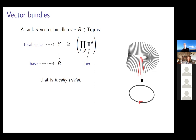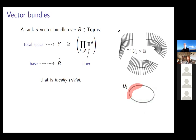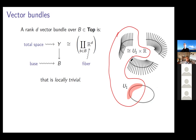Suppose you have a vector bundle where the base is the circle S^1 and the total space is the Möbius band. The pre-image of each point is a real vector space — in this case of dimension one, so this is a rank-one vector bundle. Locally trivial means I can cover the base by open sets so that when I restrict the vector bundle to each open set, I get something trivial — a product of the open set and the fiber.